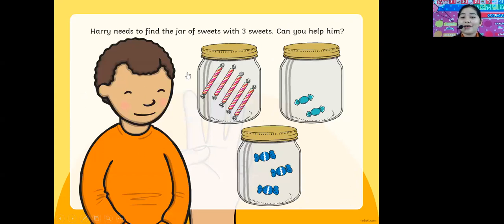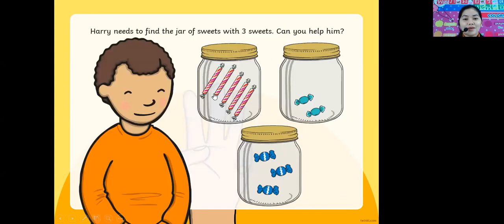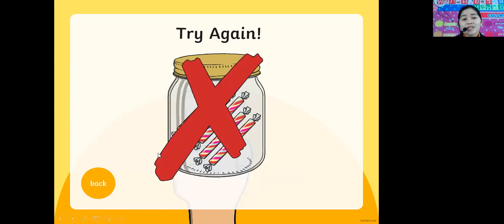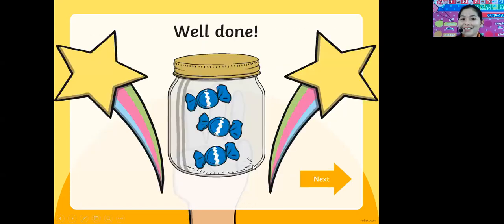This is Harry. Harry needs to find the jar of sweets with three sweets. Can you help him? Let's click this one — is this number three? It's not. Try again. What about this one? It's not again. Try again. Maybe this is the one. Well done, kids! That is three sweets in the jar: one, two, three.